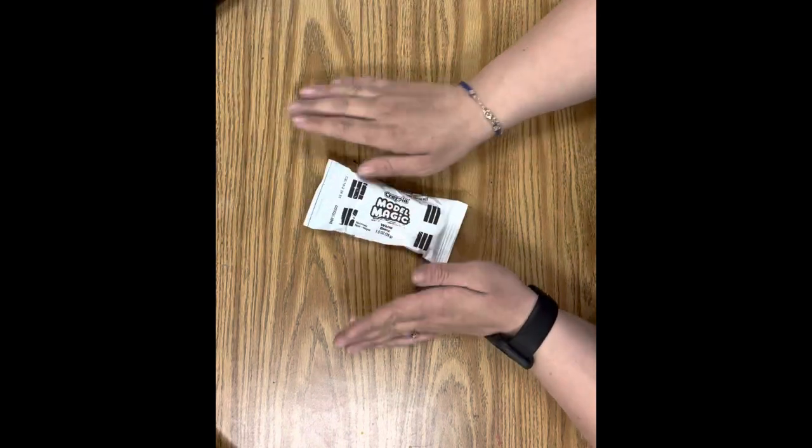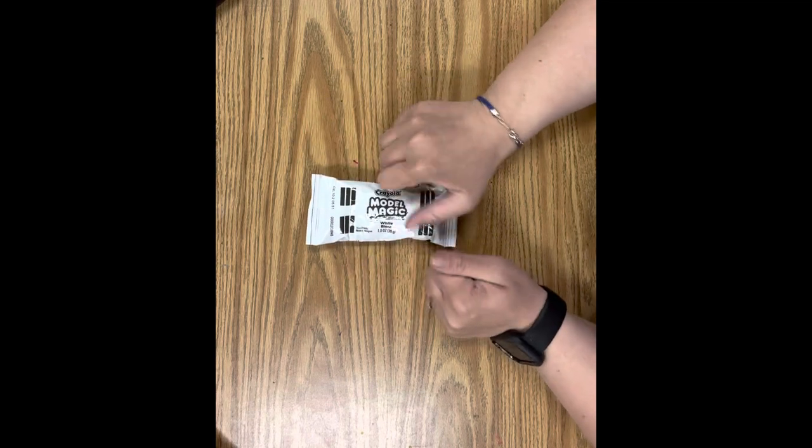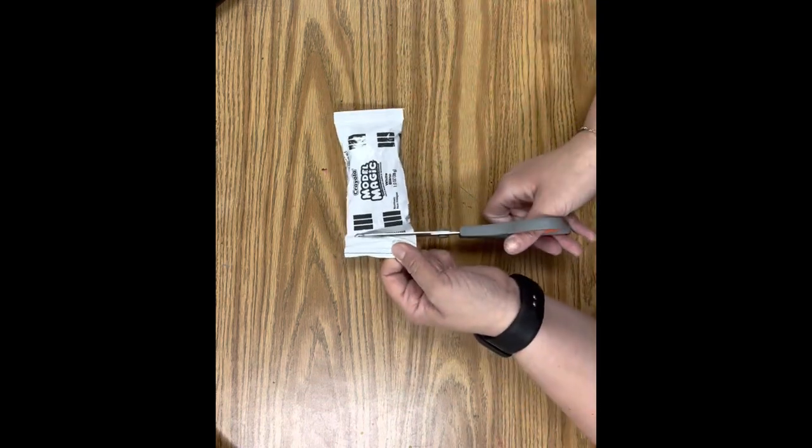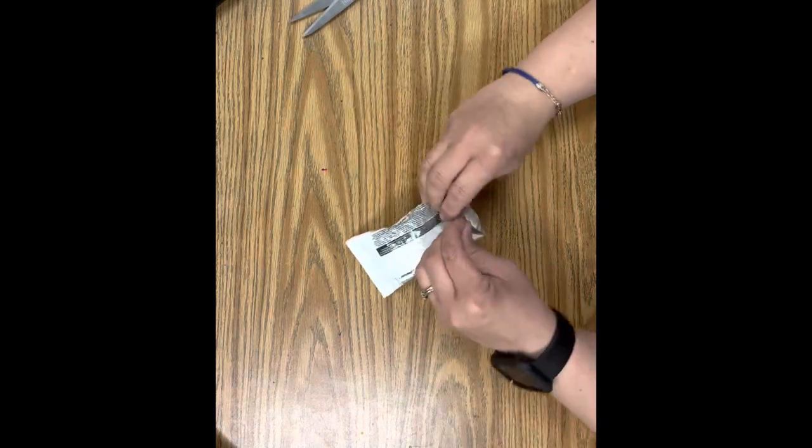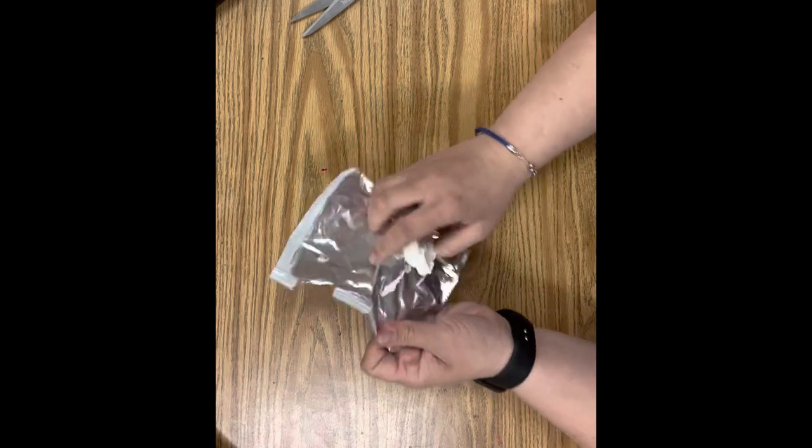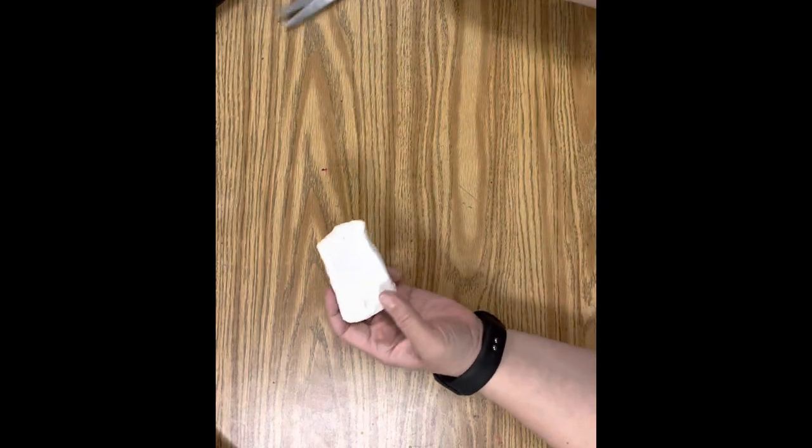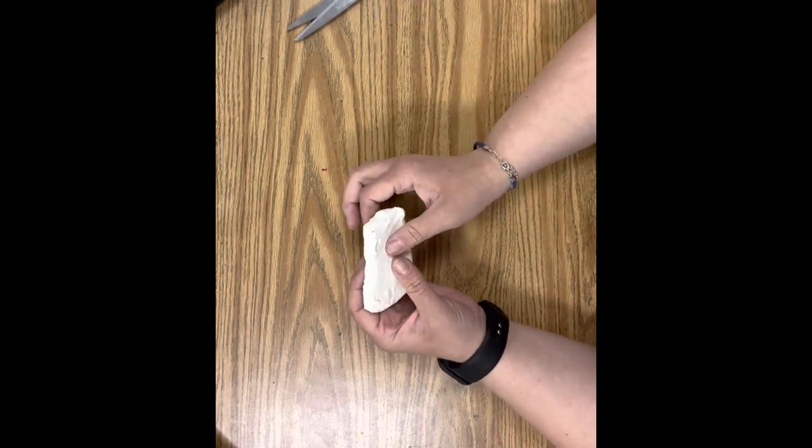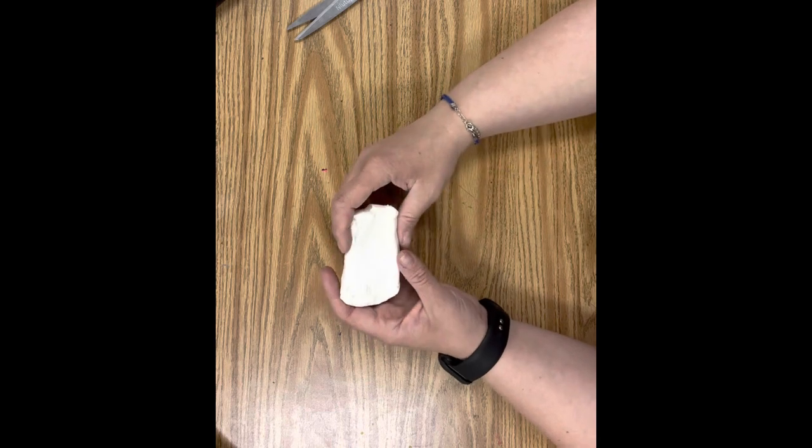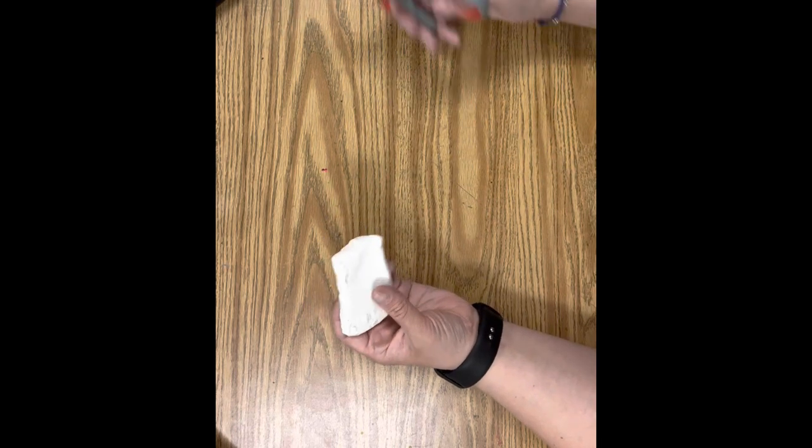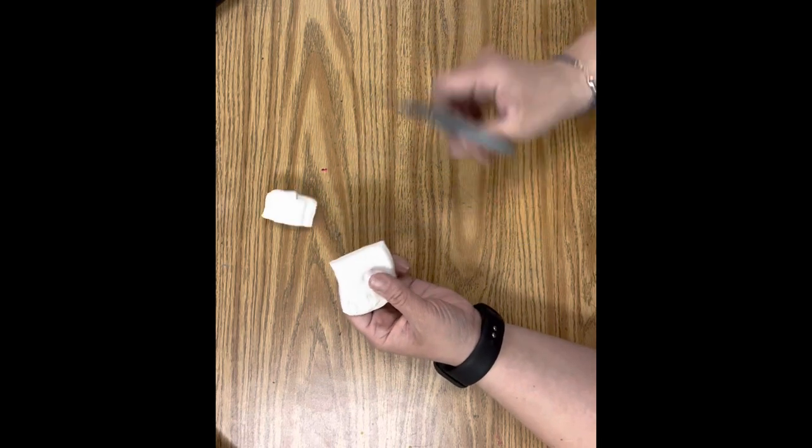Once you've done that, set that aside and grab a pack of Model Magic. Our entire project is only going to use this one pack. The first thing we're going to do is open it up. I'm just going to use a pair of scissors to open that and pull our Model Magic out. Your trash is going to go in the trash can at your table. We are going to use about three quarters of our Model Magic for our ice cream scoop. The other quarter is going to be for our whipped cream and our cherry. I'm going to take my scissors and cut that off.